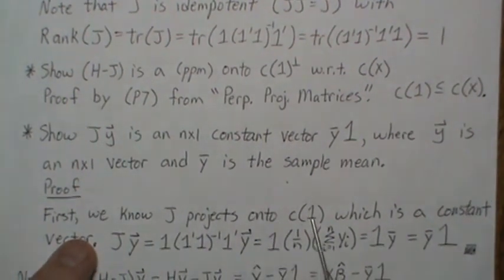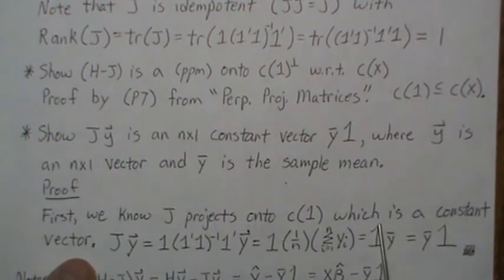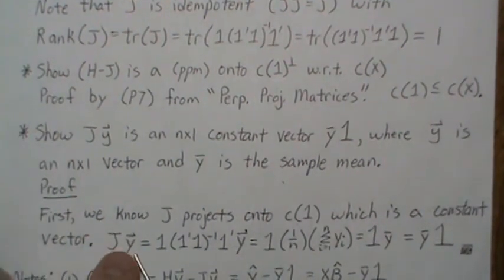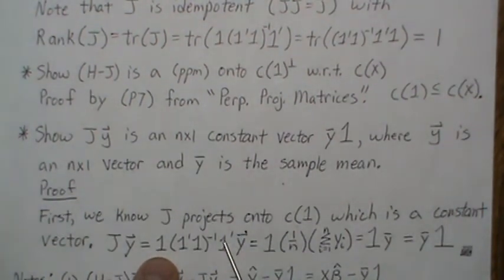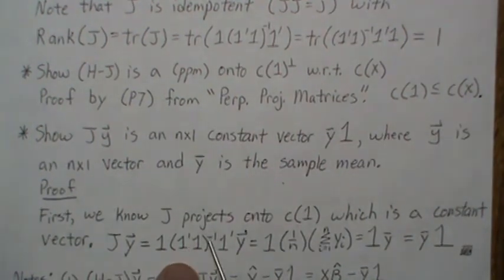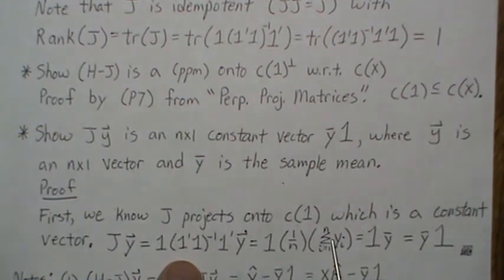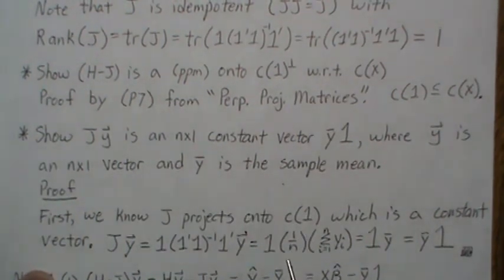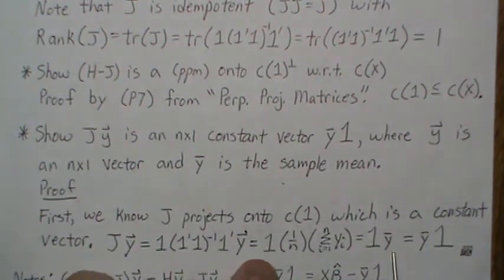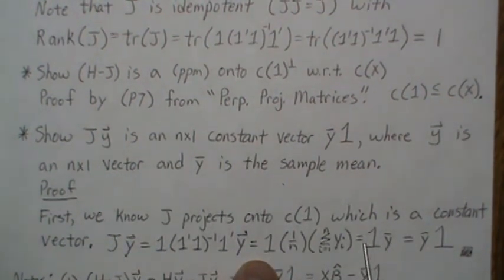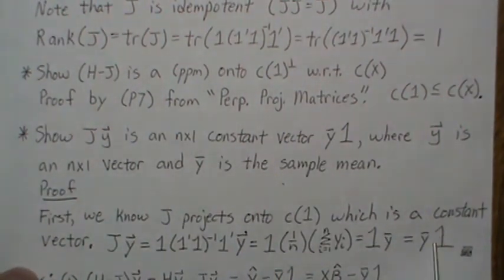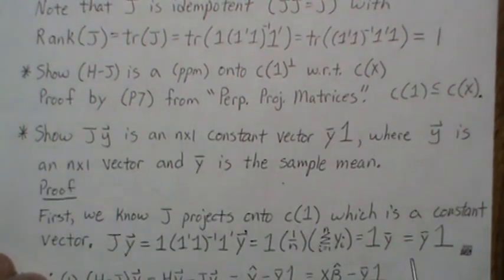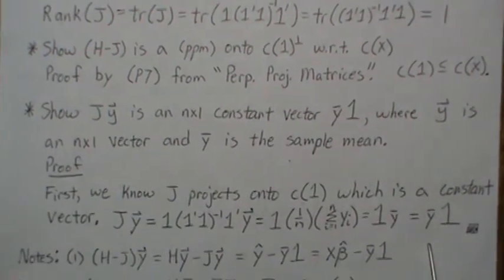We know J projects onto the column space of 1, so the result is a constant vector. Expanding J, we have J = (1/n)·1·1-transpose, and 1-transpose·Y is the sum of the y's. Combined with 1/n, that gives the sample mean y-bar, so J·Y is a constant vector with every entry equal to y-bar. Furthermore, (H minus J)·Y equals X-beta-hat minus the y-bar vector — the fitted model minus the constant. And (H minus J)·J equals zero, since J is idempotent and those spaces are orthogonal.